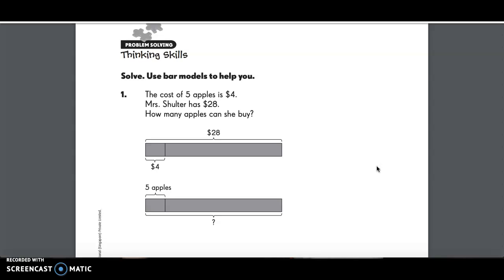Number one says the cost of five apples is $4. Five apples for $4. Mrs. Shuler has $28. How many apples can she buy? Five apples for $4. We want to know how many apples she can buy.